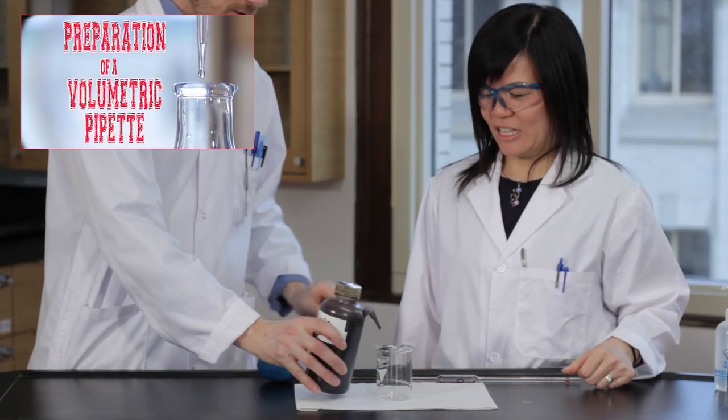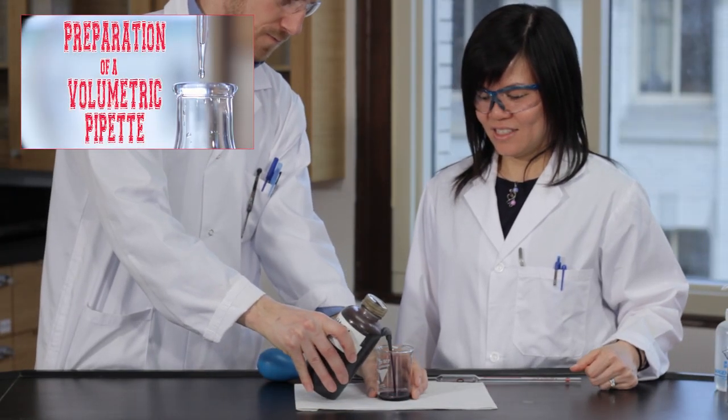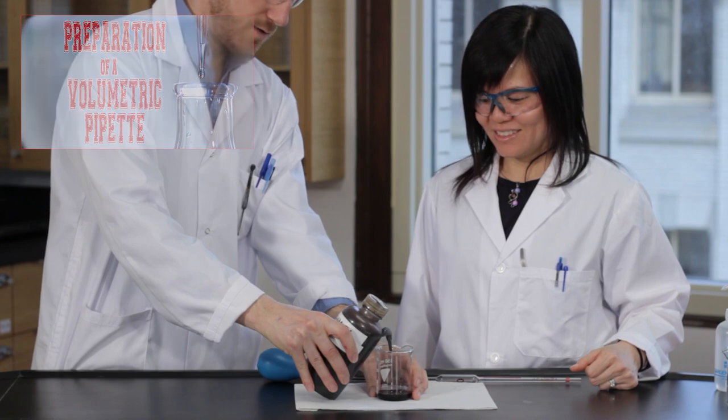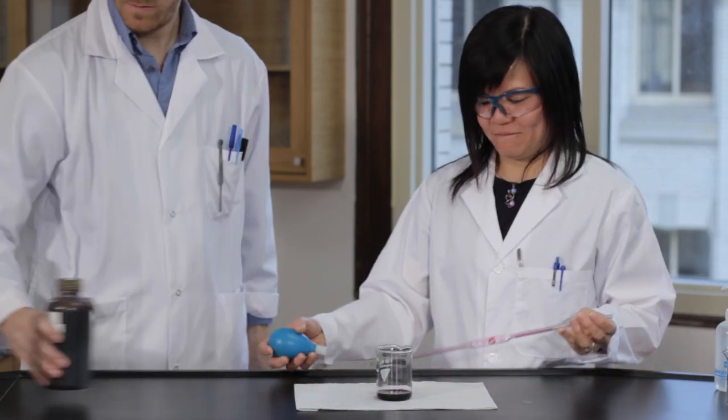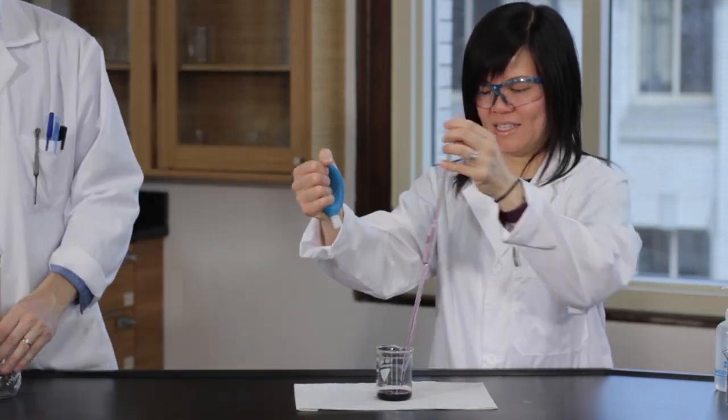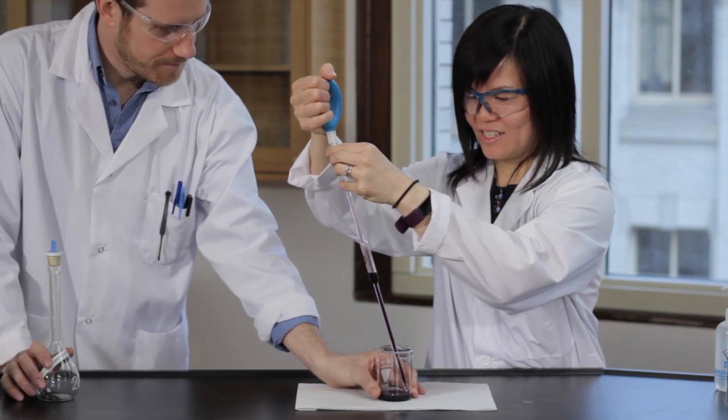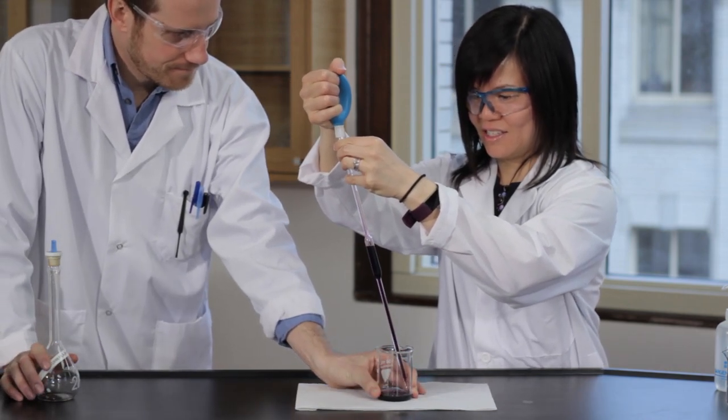Prepare a 10 mL volumetric pipette as demonstrated in another video. Measure 10 mL of potassium permanganate using the potassium permanganate stock solution and transfer it into a clean, dry, 250 mL volumetric flask.